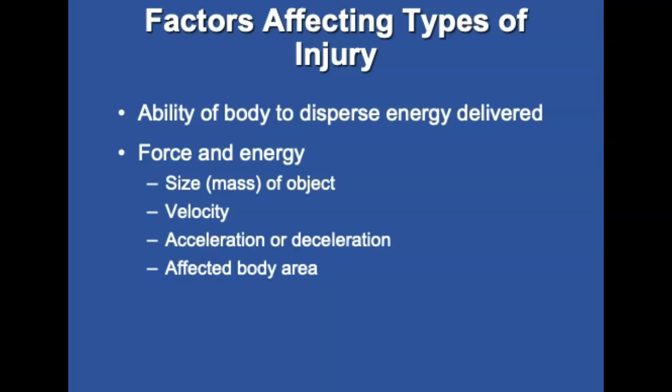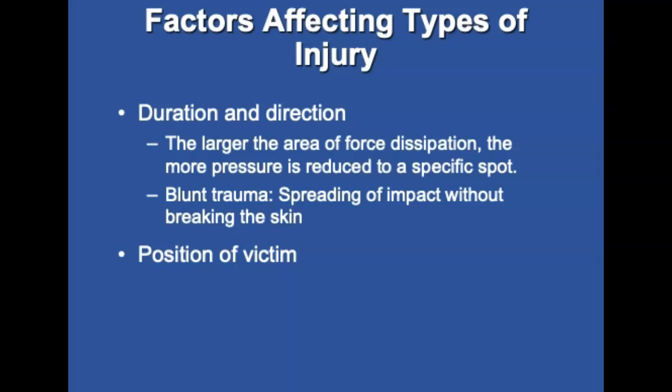The kind of injury sustained will be determined by the ability of the patient's body to disperse the energy delivered. External factors that determine types of energy include the size — the mass of the object delivering the force — the velocity, the acceleration or deceleration, and the body area affected. The larger the area of force dissipation, the more pressure is reduced to a specific spot. Blunt trauma, the spreading of impact without breaking the skin, is difficult to diagnose with often little external damage. Rapidly applied amounts of energy are less tolerated than the same amount of energy delivered over a long period of time.